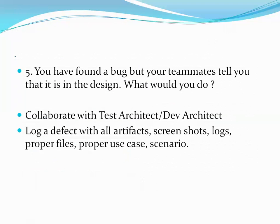Another scenario given was: you have found a bug, but your teammates tell you that it is in the design — what would you do? You need to collaborate with the test architect and the dev architect, and you should log a defect. Even if it turns out to be invalid, if a customer or client finds that defect tomorrow, you will have proof that you found it and approached senior team members. You can log the defect with all artifacts — screenshots, logs, and a proper description of the exact scenario.